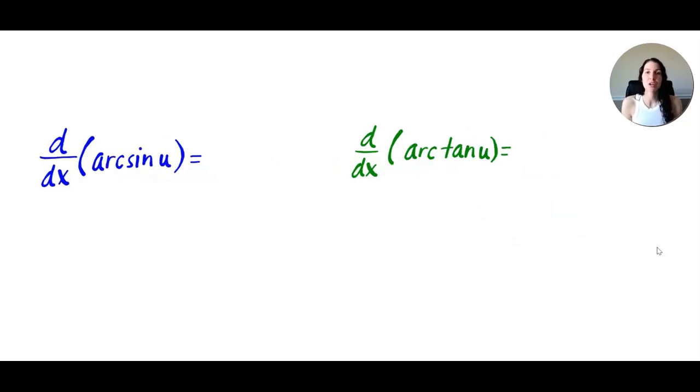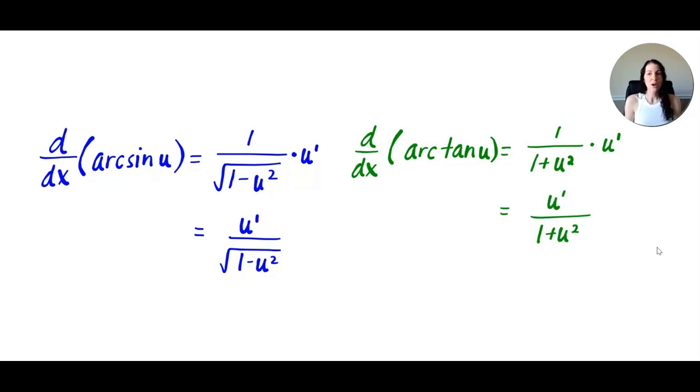Again, the two inverse trig functions you want to make sure to know the derivative of are arc sine and arc tangent. That would be 1 over the square root of 1 minus u squared times u prime. Or you can put that u prime in the numerator. And likewise, the derivative of arctangent of u would simplify to u prime over 1 plus u squared.